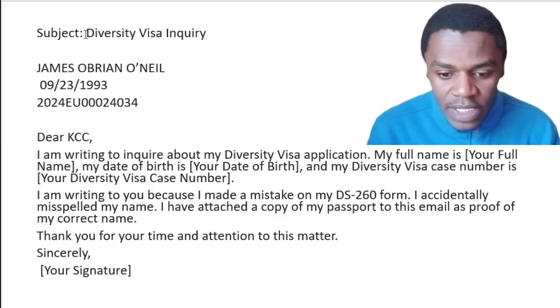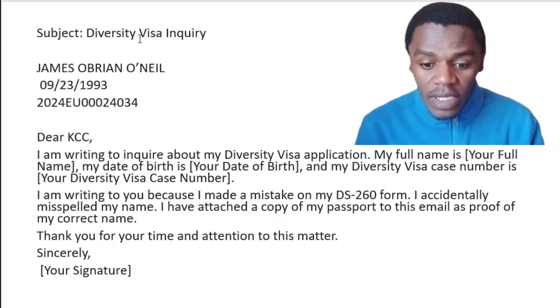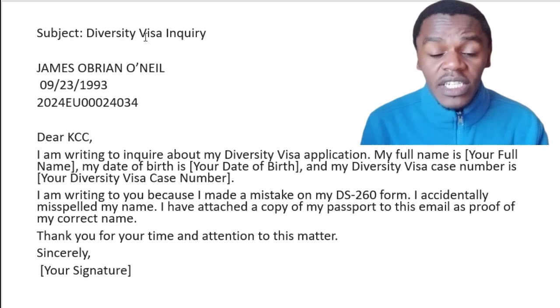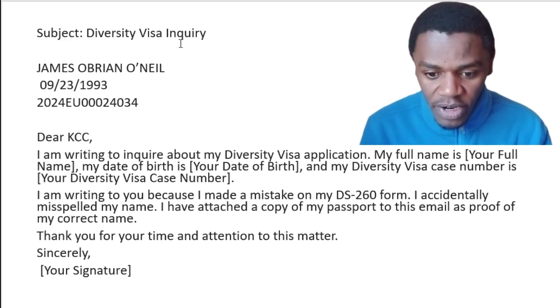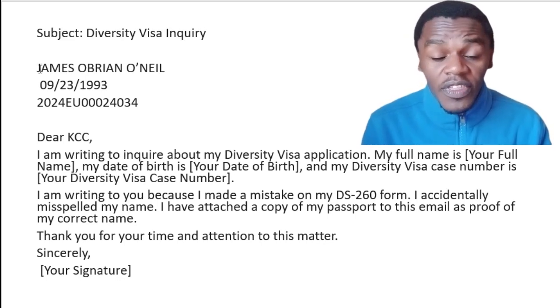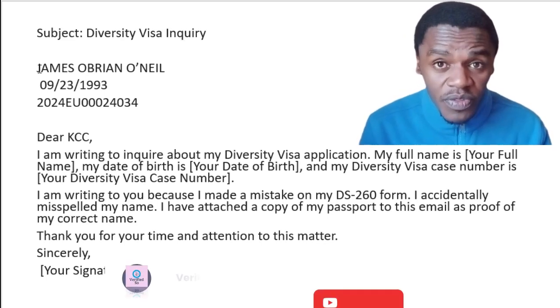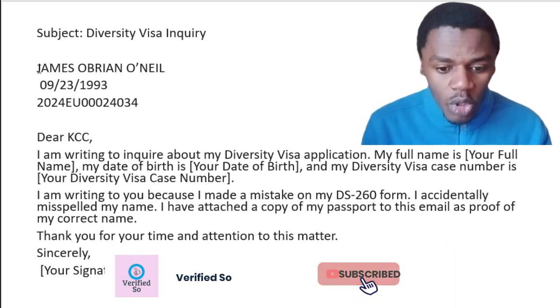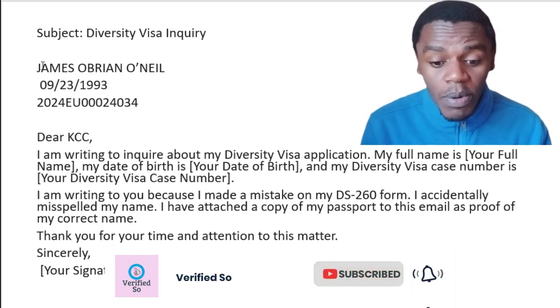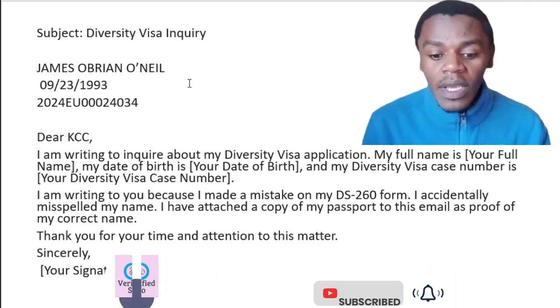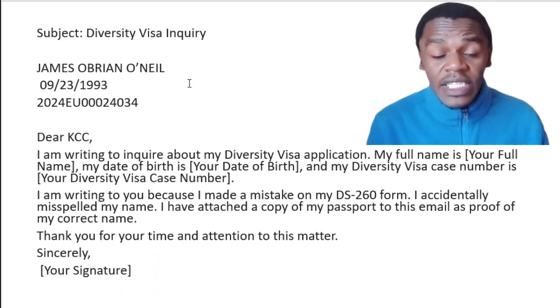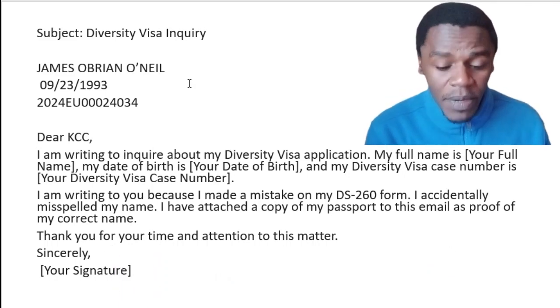But first of all, here is an email sample for requesting the unlock. On the subject, you put the reason: diversity visa inquiry. And then, in the body of the email, at the top, you first put your full name, and this is as it appears on the DS-260 form.